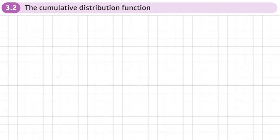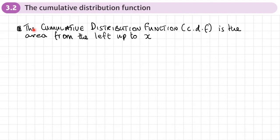This is the second section of Chapter 2 on Continuous Distributions, and this section is the Cumulative Distribution Function. The Cumulative Distribution Function, or CDF, is the area from the left up to X. You would have come across the CDF before when using your calculator to work out the area from the left for a normal distribution.